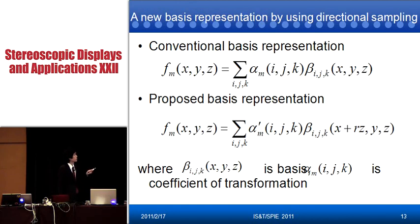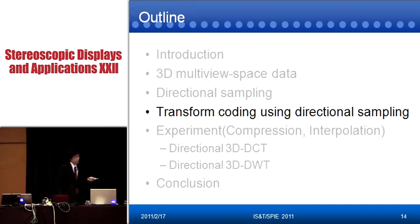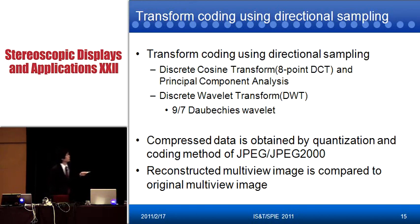Finally, we define the new basis representation using directional sampling. The conventional basis representation is defined as one form, and the proposed basis representation is defined as another, where v-beta is the basis such as the cosine transform. Next, I explain the transform coding using directional sampling, such as discrete cosine transform — especially 8-point DCT — and principal component analysis, and discrete wavelet transform, DWT.